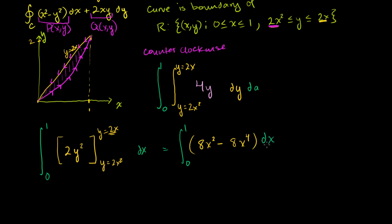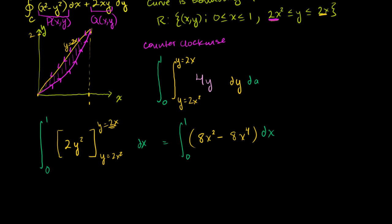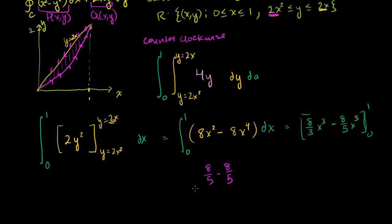Now we integrate 8x² − 8x⁴ with respect to x from 0 to 1. The antiderivative is (8/3)x³ − (8/5)x⁵, evaluated from 0 to 1. Plugging in 1 gives 8/3 − 8/5, and plugging in 0 gives all zeros.